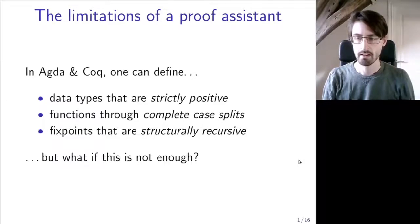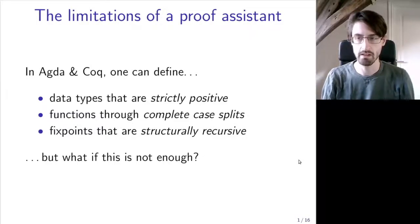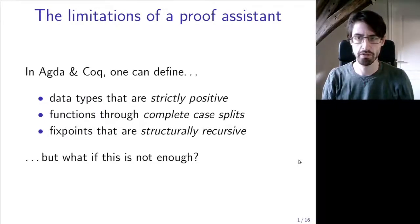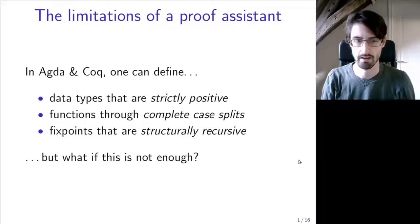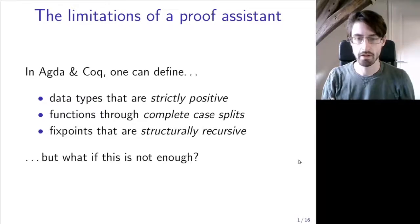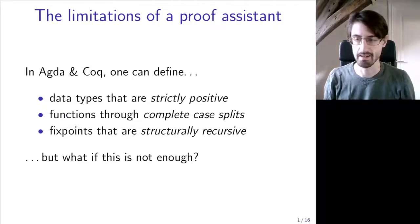These mechanisms are very general and powerful, and they allow us to do a lot of things. However, sometimes they make it harder than necessary to prove certain things, or they might even make certain things completely impossible to define. And I want to give two examples where those are the case.